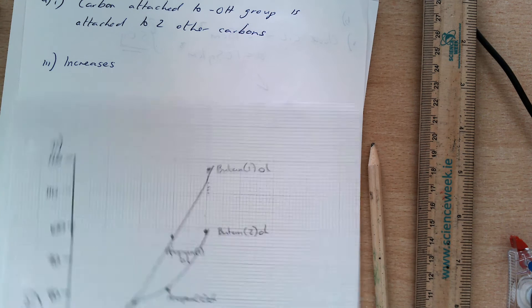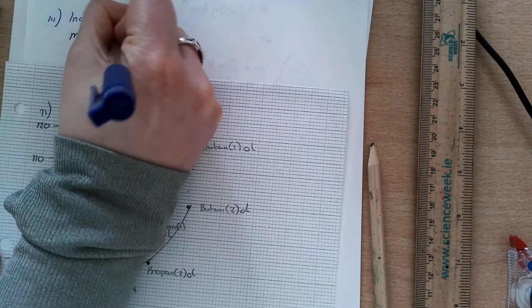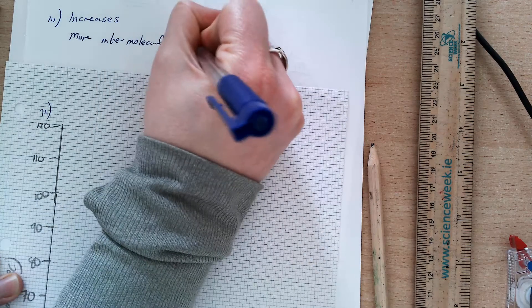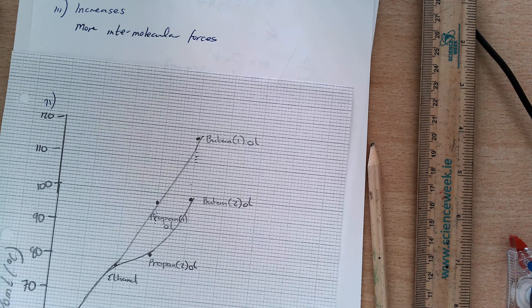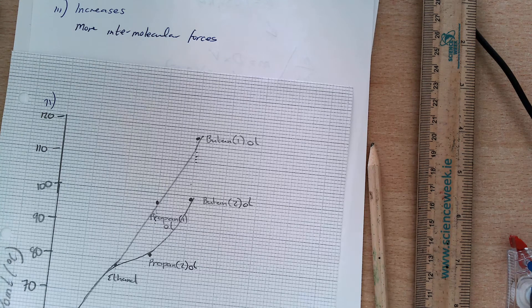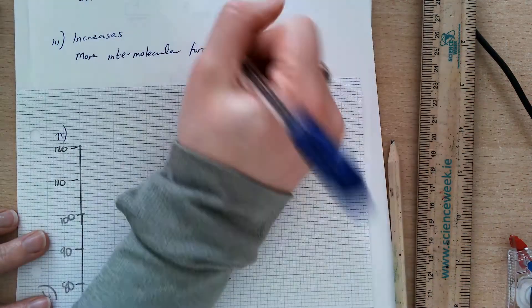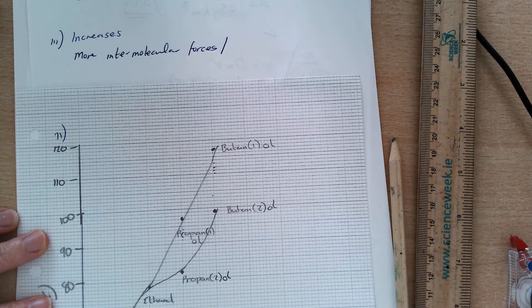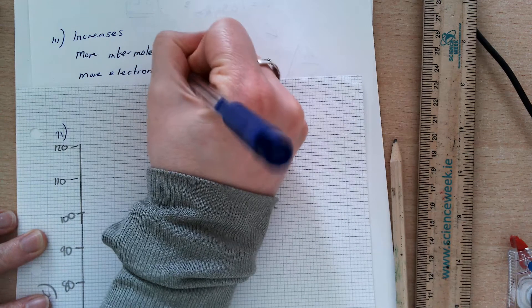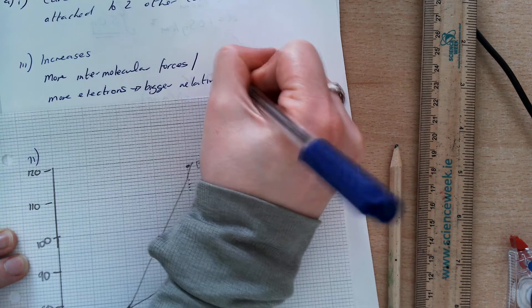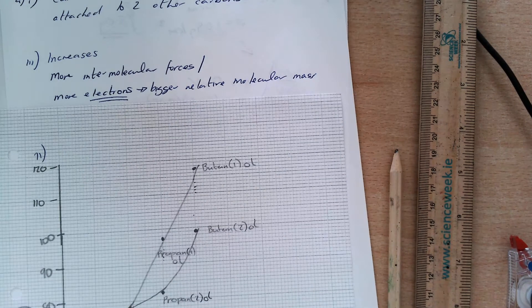And then you're asked to explain, and the reason why is because we're going to have greater hydrogen bonding. So, there's more intermolecular forces. The biggest reason why my boiling point increases is due to two things: firstly, the type of bonding, and my relative molecular mass. The reason here is that I have more electrons, which means I'm going to have a bigger relative molecular mass.